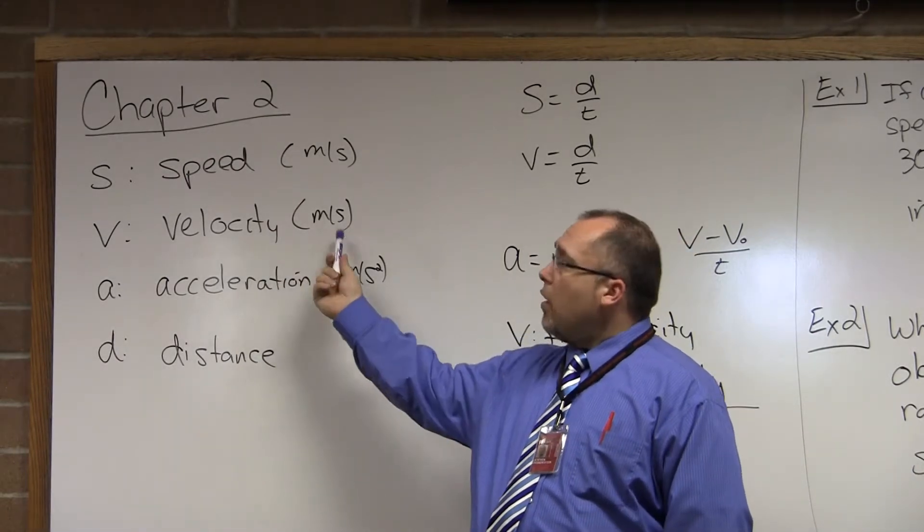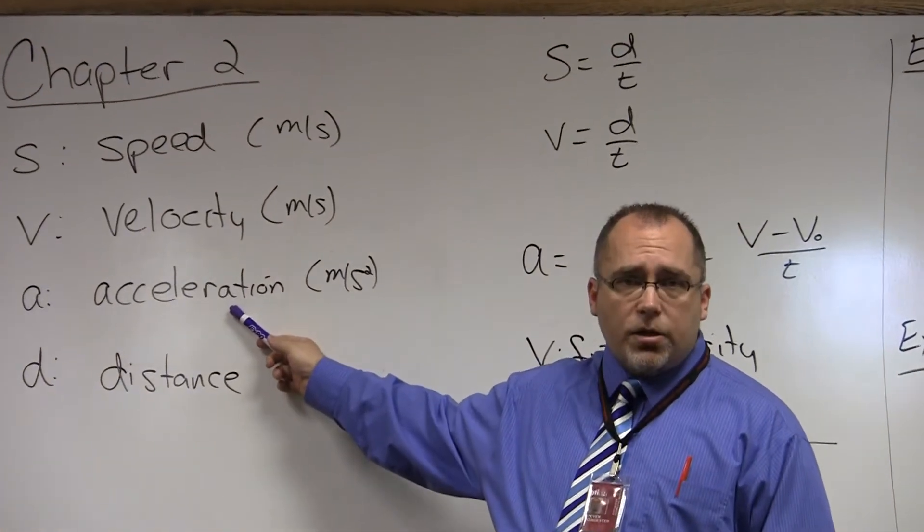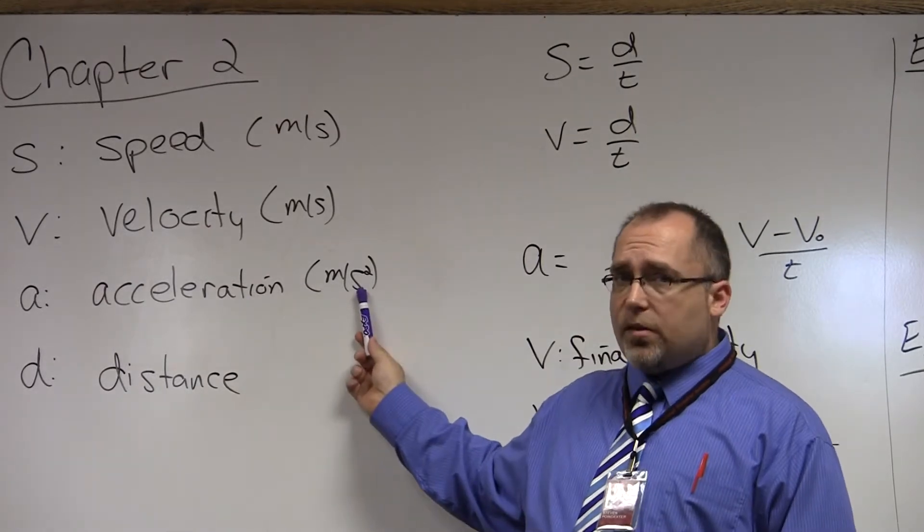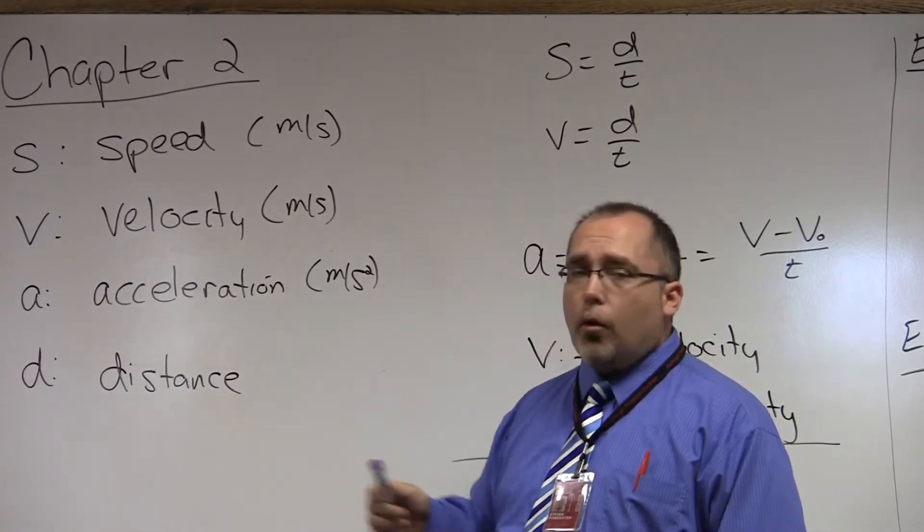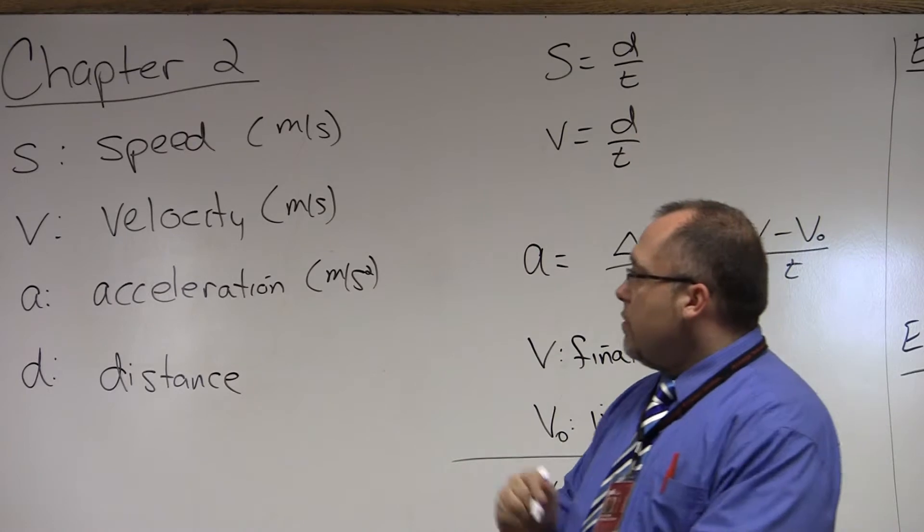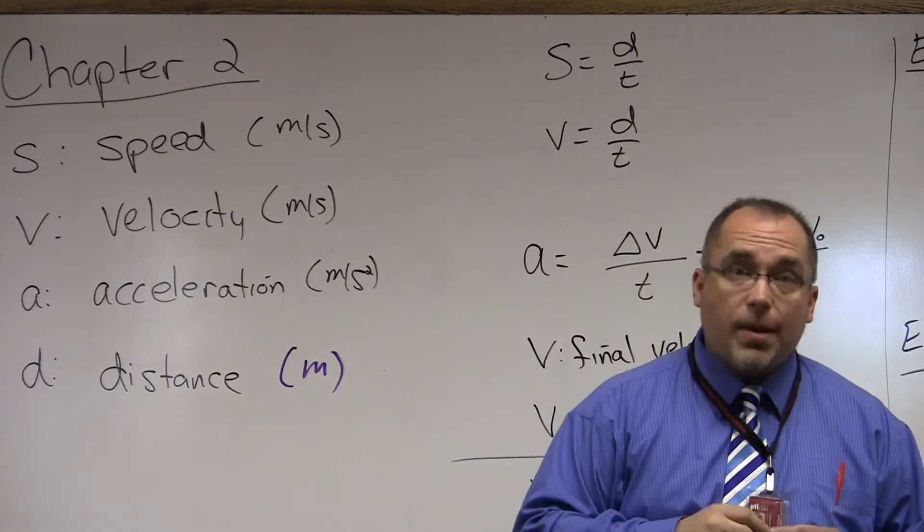Velocity, lowercase v, also measured in meters per second. Lowercase a is acceleration, which is going to be measured in meters per second squared. And lowercase d is distance, which will be measured in meters, typically.